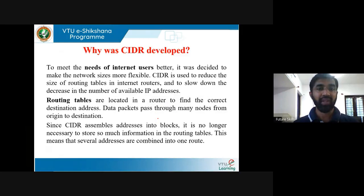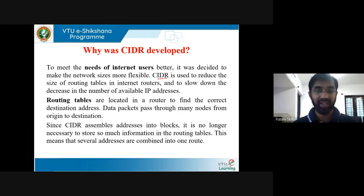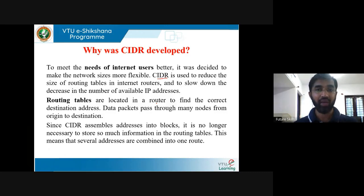Why was CIDR developed? To meet the needs of internet users better, it was decided to make network sizes more flexible. CIDR is used to reduce the size of routing tables in internet routers and to slow down the decrease in the number of available IP addresses. There were 7 billion users on earth but only 4 billion addresses. Routing tables are located in the router to find the correct destination. Using CIDR, you can reduce the number of entries in the routing table and manage IP addresses for all users.